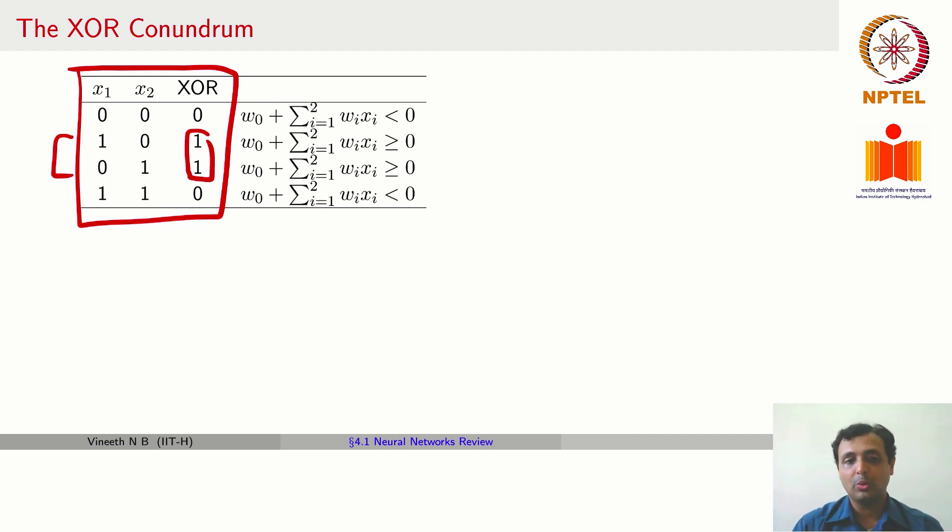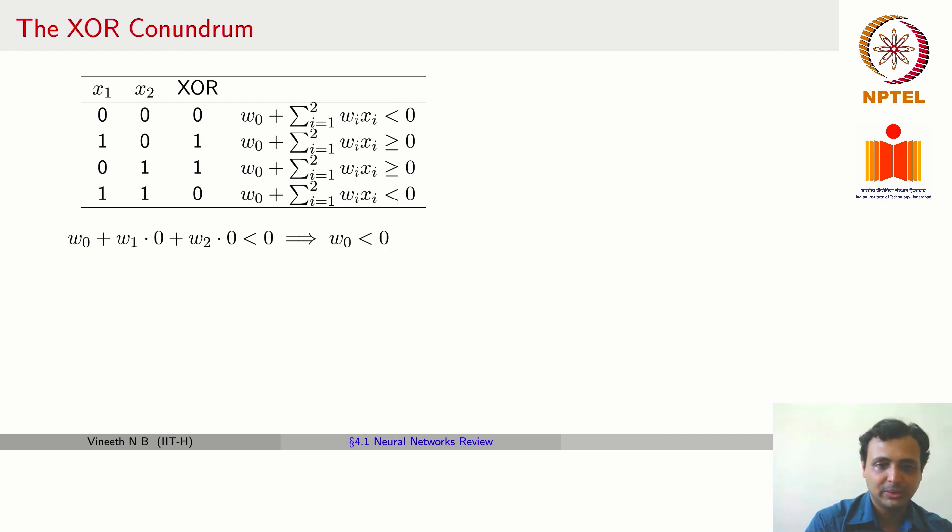From a perceptron perspective, what we would want is in the first scenario, we would want W·xi to be less than 0 because we want the output to be 0. Similarly, in these two cases, we would want it to be greater than or equal to 0, and in the last case, we want it to be less than 0 again.